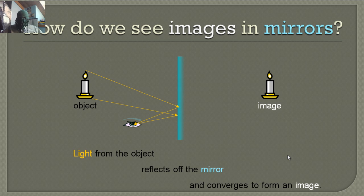Light from the object reflects off the mirror and converges to form an image. The image in a regular mirror is not going to be where the object is because we're seeing a reflection.